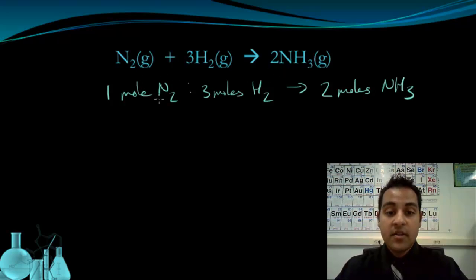So this equation, in representing these relative amounts, the one nitrogen for three hydrogen and two ammonia, works just like a recipe does. So let's take a look at a recipe.